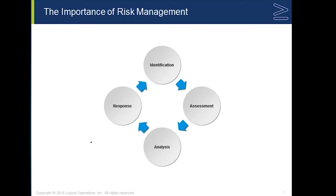Risk management is a cyclical process. As we can see, it starts with identification — we identify risks on our network. We then assess those risks to determine things like: do they affect us, what are the consequences, and what is the likelihood that someone is going to exploit this risk? We send that off for analysis to determine whether or not we need to take action, and that drives our response. This is a circular process because it has to be active — risk management cannot be passive.